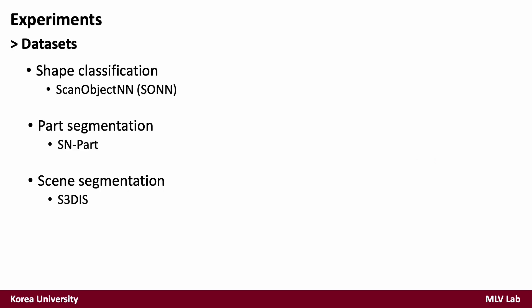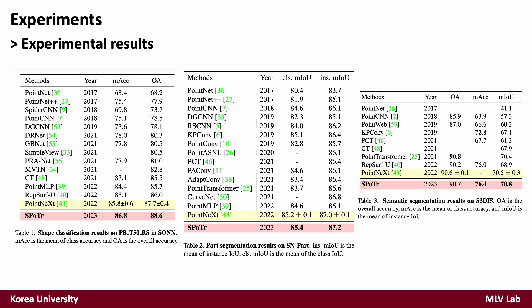To show the effectiveness of SPFormer, we evaluate our network on three different point cloud tasks. For shape classification, we use the ScanObjectNN dataset; we utilize ShapeNet for part segmentation, and S3DIS for semantic segmentation. On shape classification, SPFormer outperforms all baselines. On part segmentation, although performance on ShapeNet is quite saturated, SPFormer achieves the best performance with considerable improvements. On semantic segmentation, SPFormer shows the best performance over all previous methods on every metric.